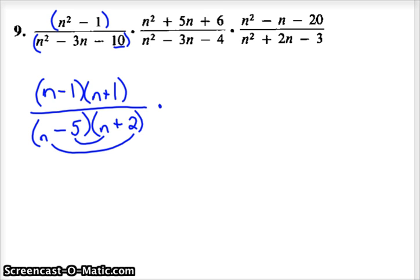Times, then you factor this top portion, and that factors to plus and plus is plus and plus. n and n, 6 breaks into 2 and 3 or 6 and 1, and I'm going to try the 2 and 3 and check it. So that would be 2n and 3n, which is 5n, so that's correct.